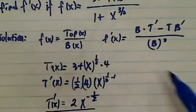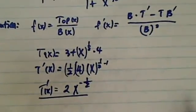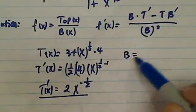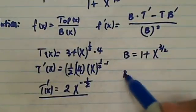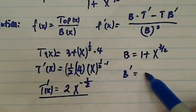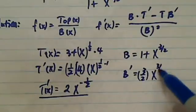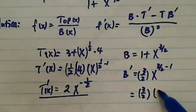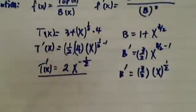Okay, the bottom function: let's see, we have some space over here. The bottom function is equal to 1 plus x to the three halves. So the bottom function's prime is equal to three halves x to the three halves minus 1, which is equal to three halves x to the half.